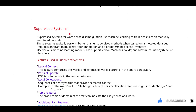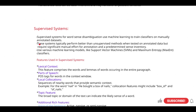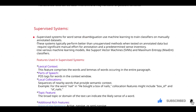The main aim of supervised systems is to deal with word sense disambiguation. The first point: supervised systems for word sense disambiguation use machine learning to train classifiers on manually annotated data.